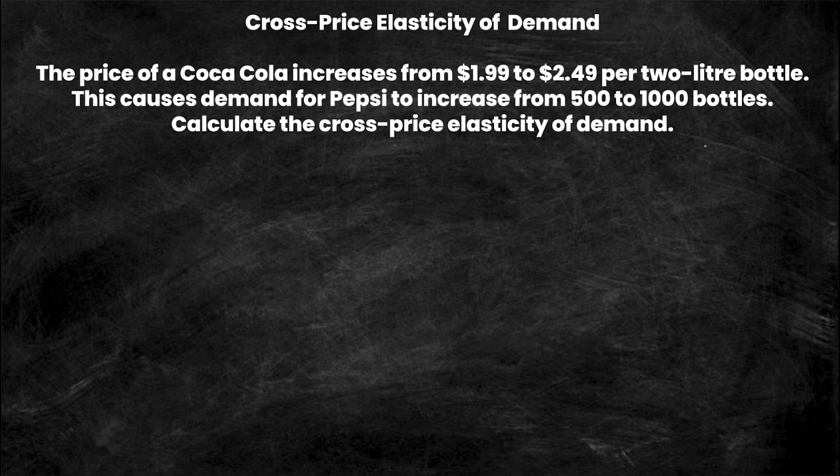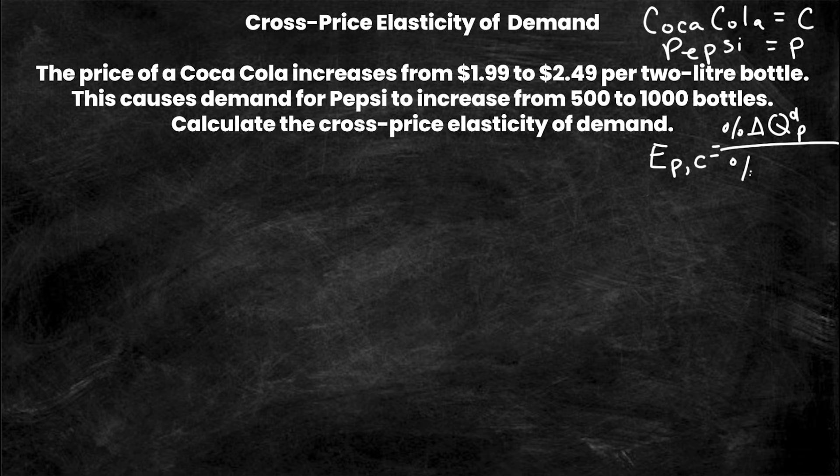Let's get started. So first thing that we're going to do is write down the formula for cross-price elasticity of demand. We have two goods. Those goods I'm going to denote Coca-Cola as C for obvious reasons and I'm going to denote Pepsi as P just so we can tell them apart. So in this case I'm looking for the elasticity of P comma C, which is the elasticity of Pepsi comma Coca-Cola, and that is simply equal to the percentage change in quantity demanded of Pepsi divided by the percentage change in price of Coca-Cola.